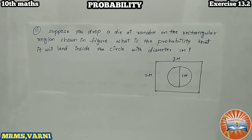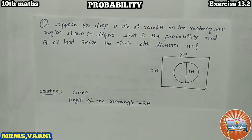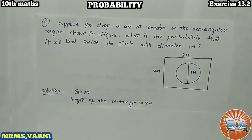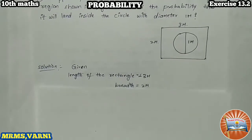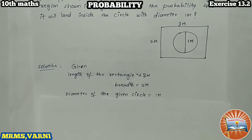Let us write what is given first. Given: length of the rectangle is 3 meters, breadth 2 meters, diameter of the circle is 1 meter.